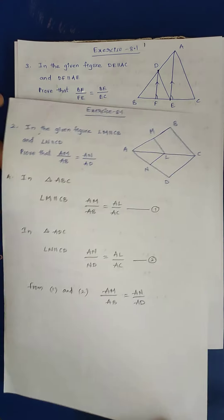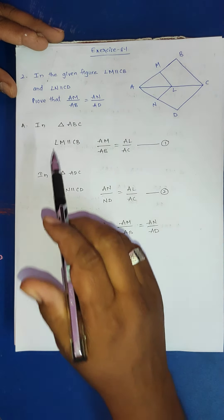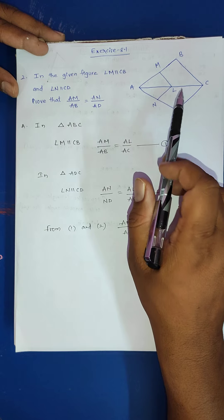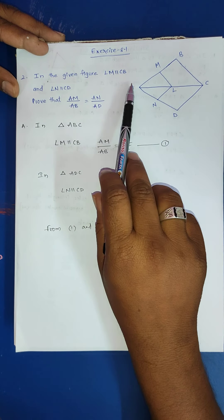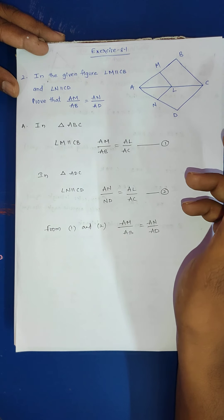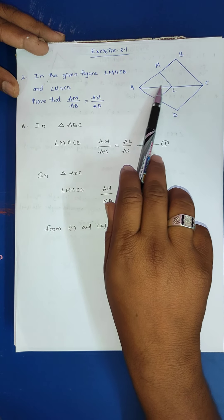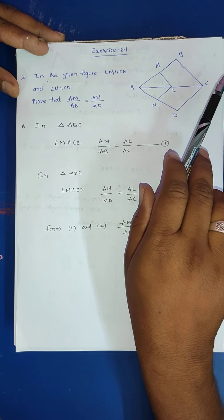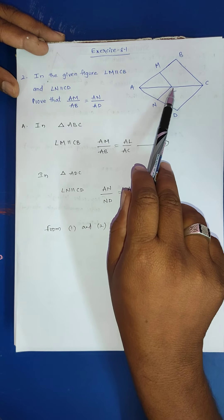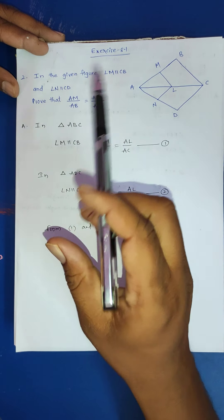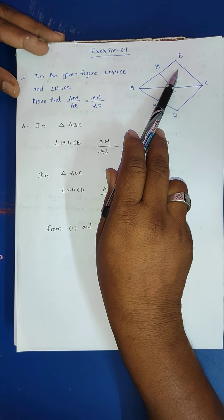First problem completed. Now second problem. Observe this diagram. A, B, C is one triangle and A, D, C is another triangle. These two triangles have AC as a common side. ML is parallel to BC, and LN is parallel to CD. In the given figure, LM is parallel to CB.